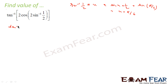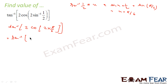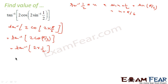So the expression becomes tan inverse of 2·cos(2·(π/6)) = tan inverse of 2·cos(π/3). Now cos(π/3) = 1/2, so this becomes tan inverse of 2·(1/2) = tan inverse of 1, which is π/4. That is the answer.